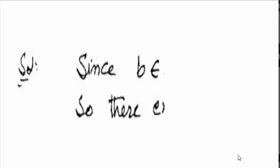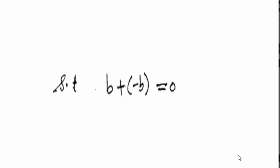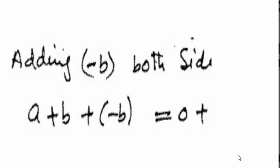For this we know that B belongs to R, which is given, so minus B also exists in R, as B plus minus B equal to zero. Given A plus B equal to zero, by adding minus B on both sides. Hence by associative, identity and inverse law we solve this question.